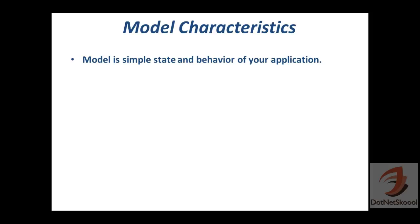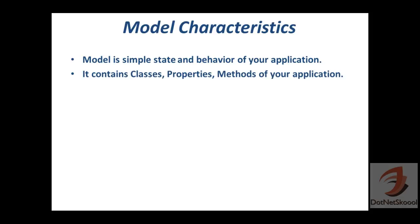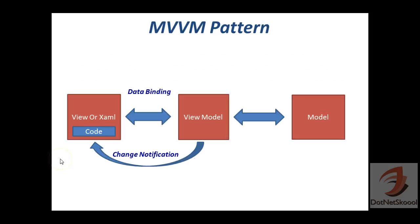The Model is simply the state and behavior of your application. For example, in a school application you might have a Student class, or in a banking application you'd have a Customer class. That Customer class will have properties like CustomerID, FirstName, and LastName, along with some methods. All these classes, properties, and methods define the state and behavior of your application and make up the Model.